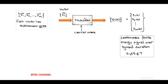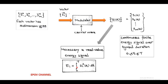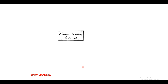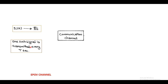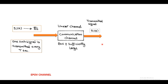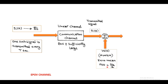The modulated signal s_i(t) is a real-valued energy signal, represented by the expression E_i equals the integral from 0 to capital T of s_i(t) squared dt, for i equals 1 to capital M. During transmission through the channel, only one signal of energy E_i is transmitted per T seconds, over a linear channel with sufficiently large bandwidth. The transmitted signal s_i(t) gets added with noise w(t), called additive white Gaussian noise, having zero mean and power spectral density N0 over 2.